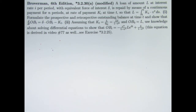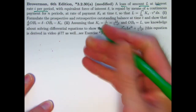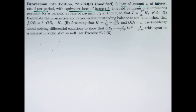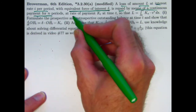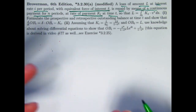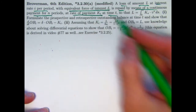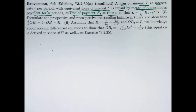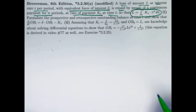Here it is — I've modified it from the book. A loan of amount L at interest rate i per period, that's constant, and has equivalent force of interest delta (delta equals the natural log of 1 plus i), is repaid by means of continuous payment for n periods, with rate of payments k sub t at time t. In this video, unlike the last one, the payment stream is varying — it's a function of t. In order to pay off the loan by time n, a certain equation needs to be true.